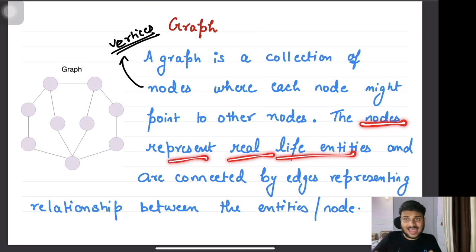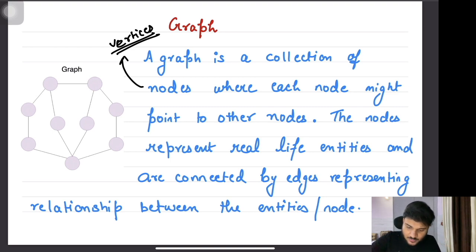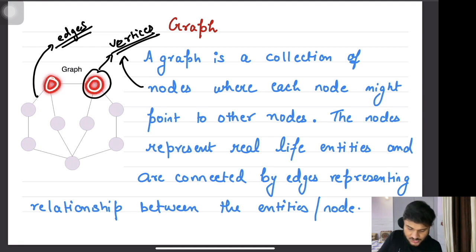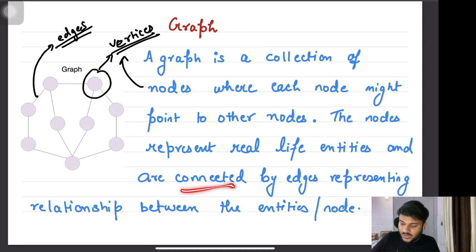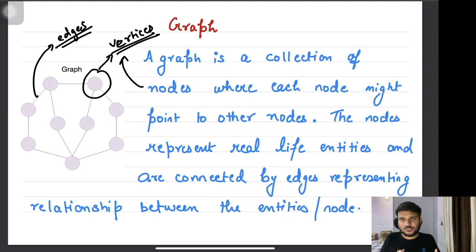These nodes are connected to each other via edges. A few nodes are going to be connected via each other and this connection is established by edges. Here you can see these are edges and these are what you can say vertices or nodes. This diagram represents a typical graph — these circular structures are your nodes and vertices, connected via these straight lines which represent the edges. The edges represent the relationship between the entities and nodes.